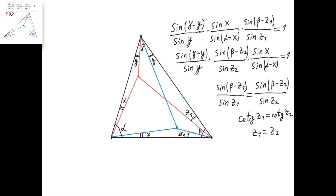Now let's apply the same theorem for the constructed isogonal point. We get: sine of (gamma minus y) divided by sine of y, times sine of (beta minus z2) divided by sine of z2, times sine of x divided by sine of (alpha minus x), equals 1.